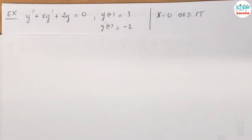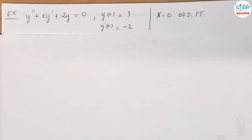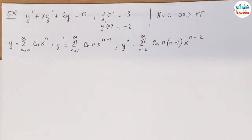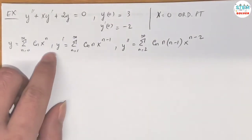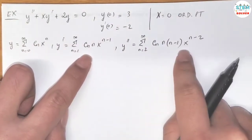Solving an initial value problem: y double prime plus x y prime plus 2y equals 0, with y(0) equals 3 and y prime(0) equals negative 2. Given x equals 0 is an ordinary point, our solution is given as a power series from 0 to infinity: y equals the sum of c_n x to the n. Take the first and second derivatives and use these power series.